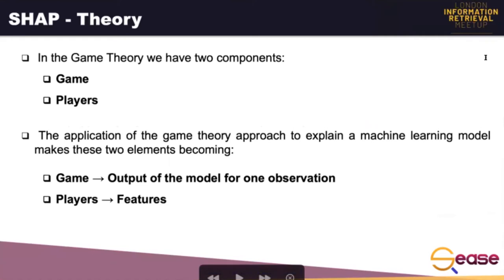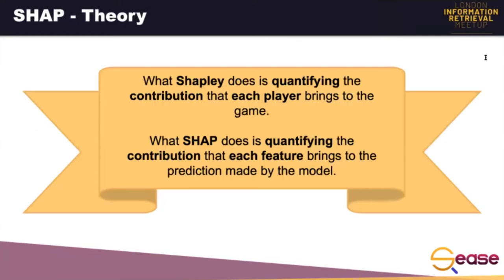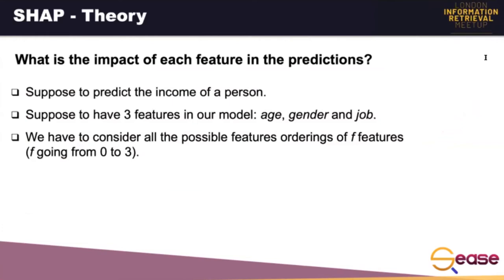We can suppose that in our scenario, some features can be more important than others in the decision process, and SHAP helps us make this kind of evaluation. The SHAP library is based on a game theory approach, and this kind of approach relies on two components: a game and some players. Making a correlation with our machine learning context, in SHAP the game corresponds to the output of the model for one specific observation, while the players are the model features. What Shapley does is quantify the contribution that each player brings to the game, and what SHAP does is quantify the contribution that each feature brings to the prediction made by the model. It is important to point out that the game in SHAP concerns a single observation, therefore it gives us local interpretability of the model.